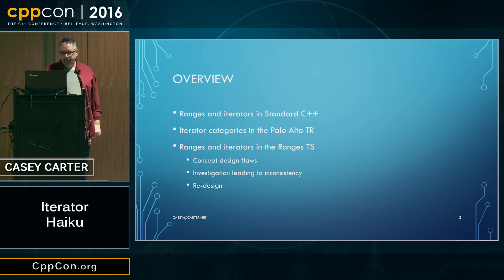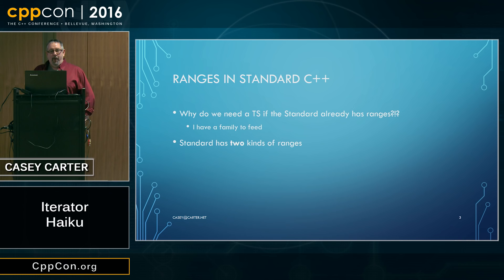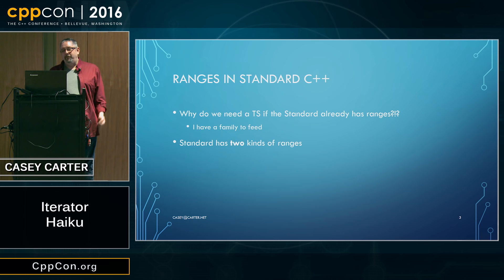First of all, ranges and standard C++. Why do we need a Ranges TS if there are already ranges in the standard? The answer is I have a family to feed, so it's important that I be paid to do something. And I'd rather be paid to work on ranges than to dig ditches. But realistically speaking, the standard has two different kinds of ranges.